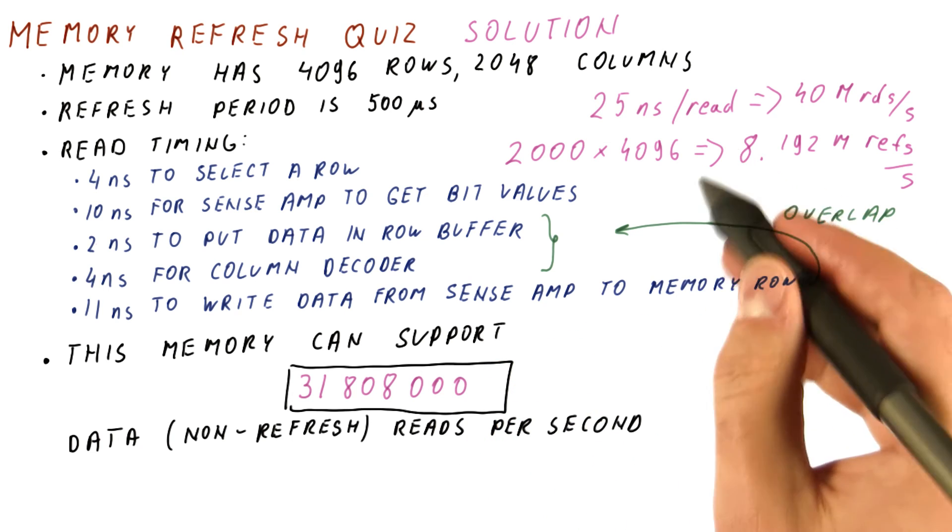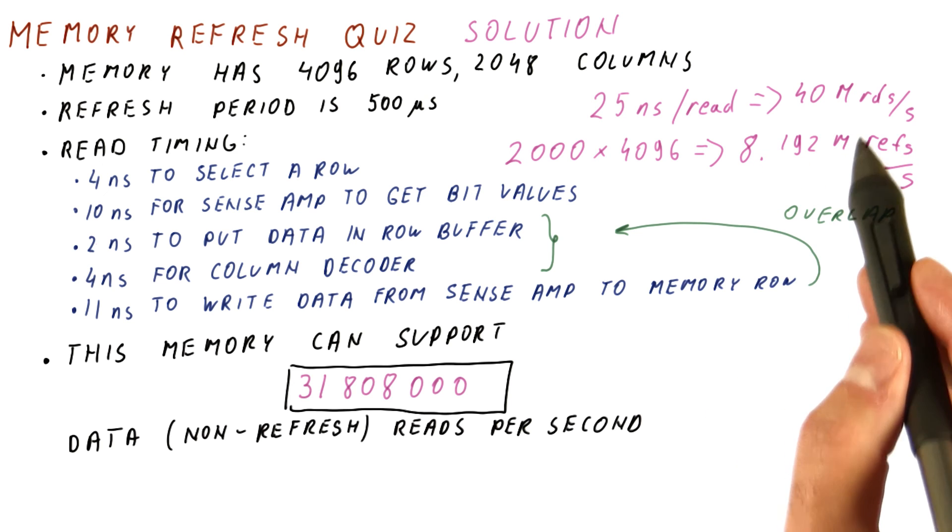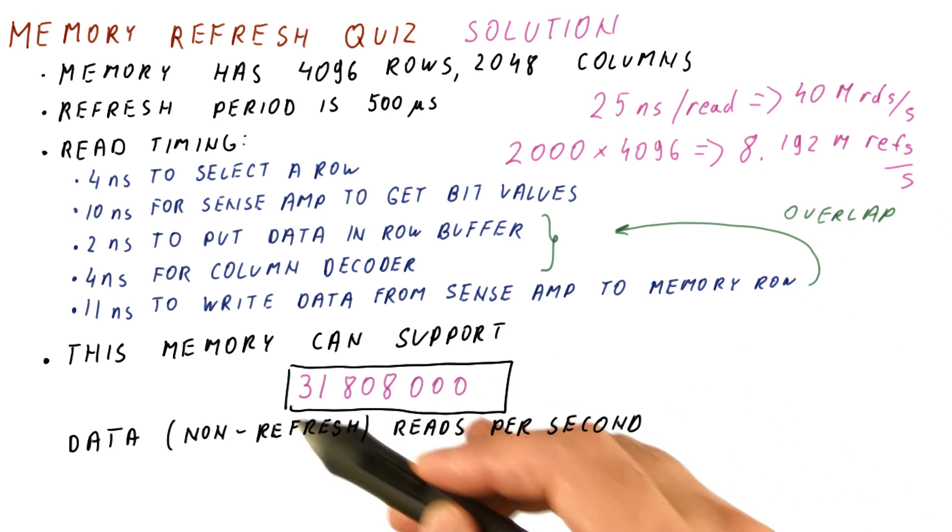So again, without refreshes, we would be able to do 40 million. But because refreshes need to happen, we only have this many reads left in a second.